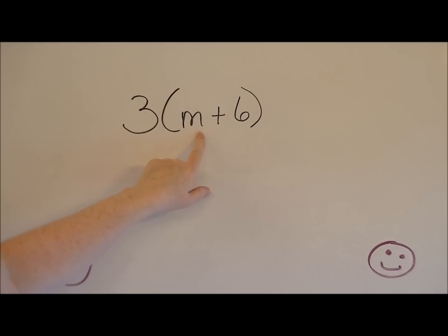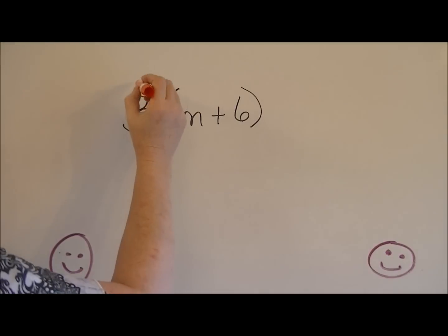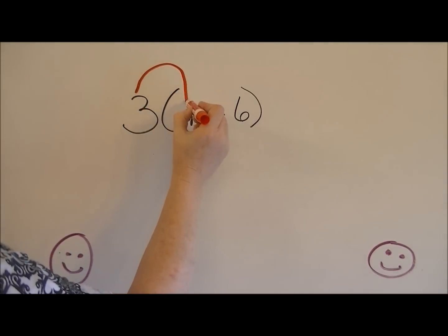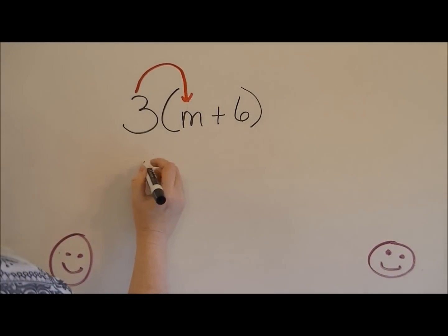We can't add six and m together. So what you're going to do, I like to put a picture in your head to help you remember how to work the problem as I make a rainbow. So we're going to multiply three times m, which would be 3m.